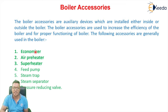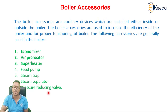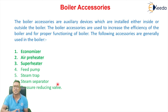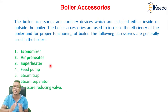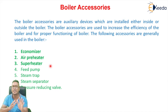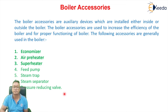The seven boiler auxiliaries are: first, economizer; second, air preheater; third, superheater; fourth, feed pump; steam trap; steam separator; and pressure reducing valve. In this lecture, I will cover the first three — economizer, air preheater, and superheater. In the next part, I will cover the remaining four auxiliaries: feed pump, steam trap, steam separator, and pressure reducing valve.